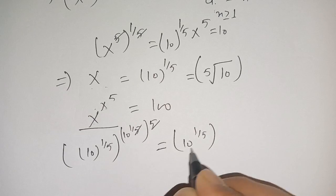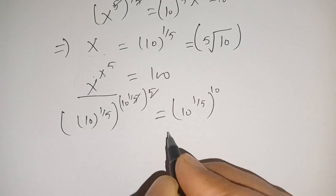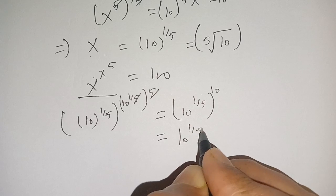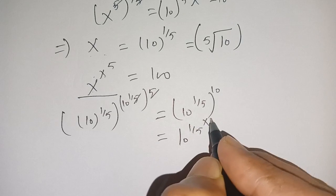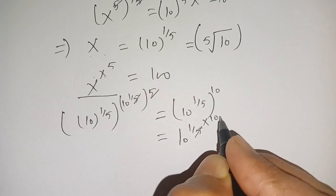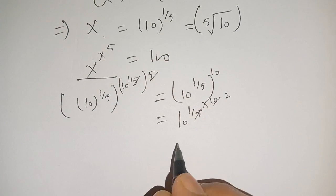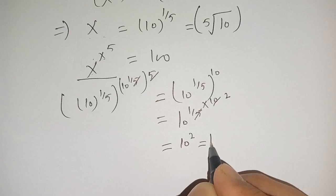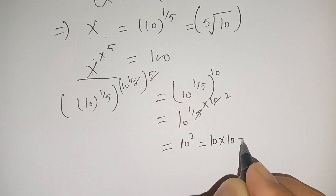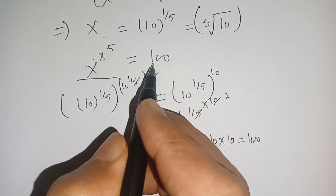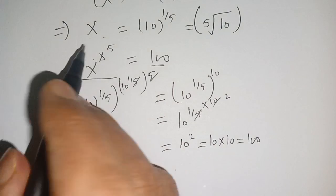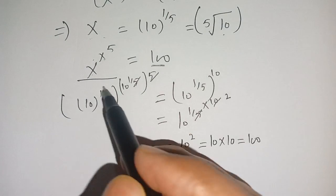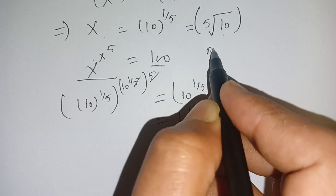We can write this as 10^(1/5 × 10), which equals 10^2. We can write 10^2 as 10 × 10 = 100, which equals our right-hand side. Thus x equals the fifth root of 10 is the correct solution to this equation.